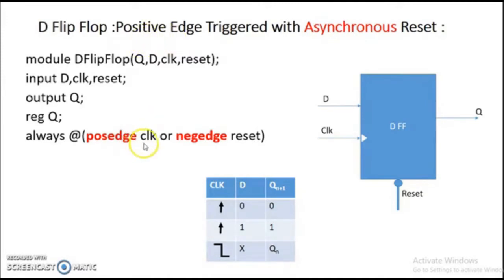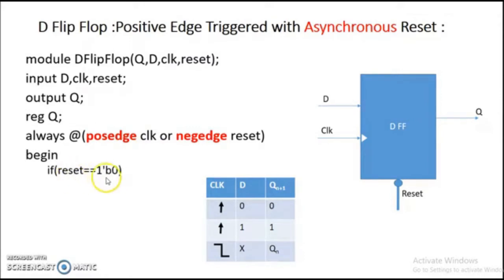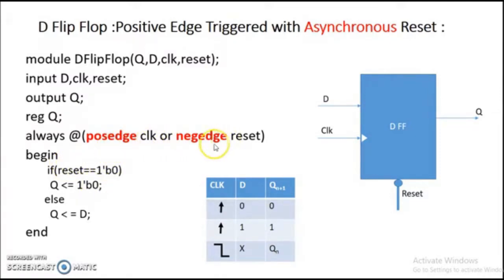Since we are designing a positive edge triggered flip-flop, we write the posedge keyword before clock. This means the always block executes only when the clock makes a positive transition (low to high), or when the reset signal changes from high to low for the asynchronous reset. Inside the always block: if the reset signal is zero, the output is set to zero; else the output is same as D. This is how the D flip-flop works, and this is the complete design module using behavioral modeling.